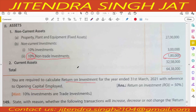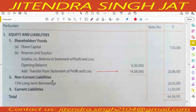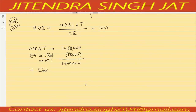Long term borrowing has a rate of 15 percent on 24 lakh, which is 3,60,000. Adding 3,60,000 to 14,40,000 gives 18 lakh. This is considered as net profit before interest and tax.